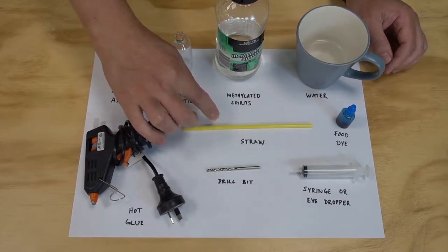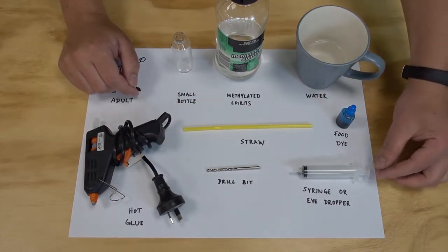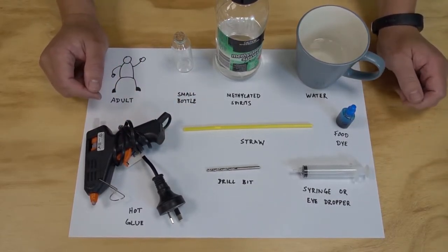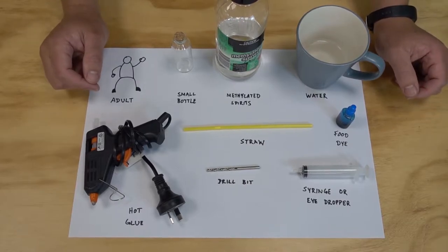We're going to want a drill bit roughly the same size as our straw, and a syringe or eyedropper could come in really handy here. You could try it without it, but it's going to get messy if you don't have one.